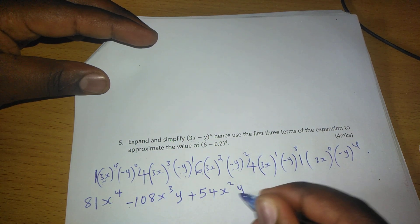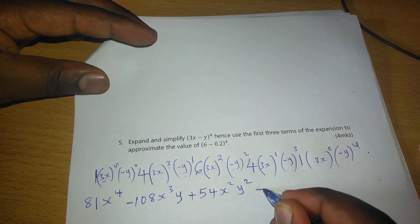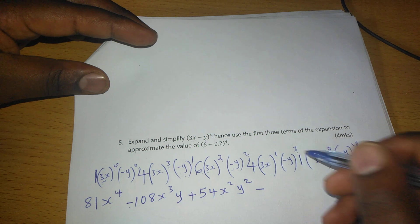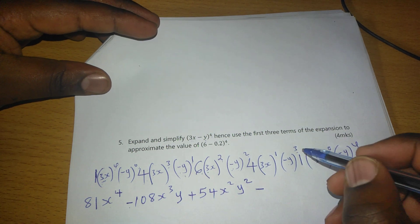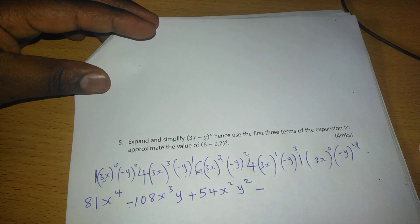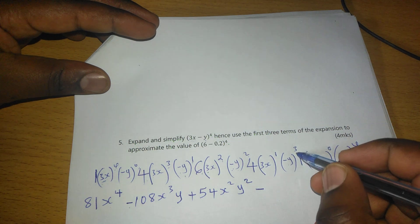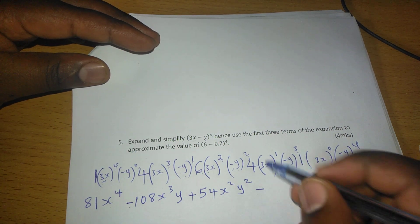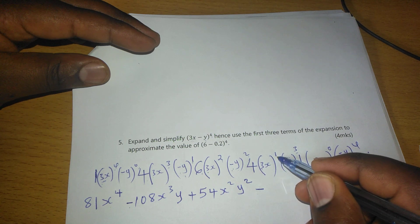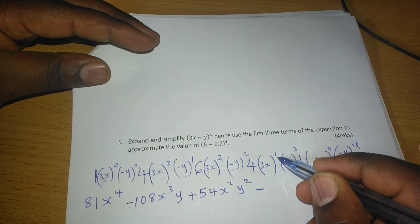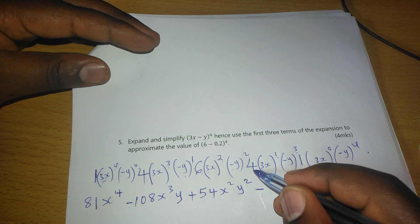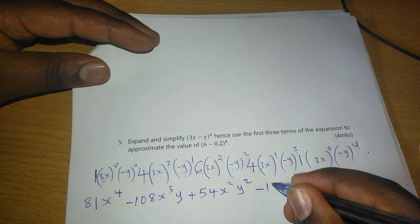Minus, since -y raised to 3 becomes -y cubed. Then we will have a negative sign here. So 3 raised to 1 becomes 3 times 4. 3 times 4 is 12. So we will have 12.